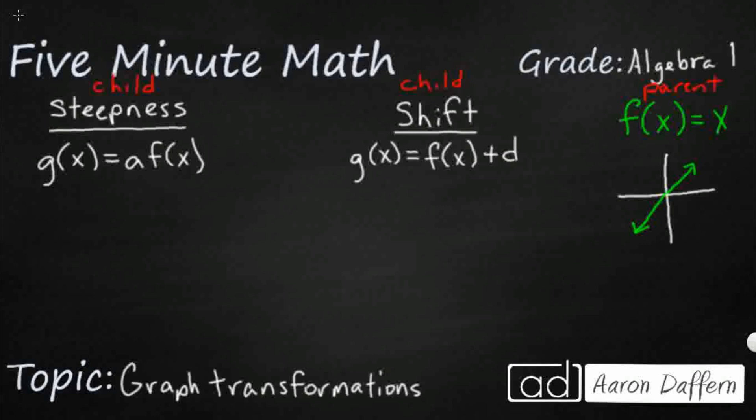So in Algebra 1 we have this concept of a parent function. I've graphed over here just a really basic f of x equals x. So that's direct variation. It has a slope of 1, has no y-intercept, goes through the origin. And our question is, if this is our parent function right here, what happens to some of these child functions if we take the parent function f of x equals x and we start messing with it just a little bit.